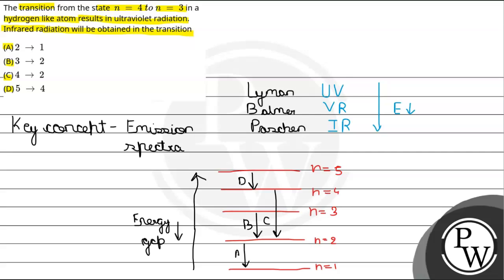so यह IR वाला reason हो जाएगा, IR transition, so option D, 5 to 4, it is the correct answer, hope you understood it well, best of luck.